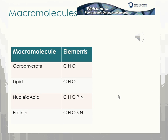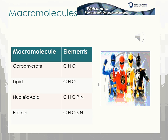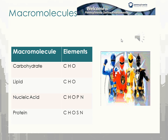We have four different macromolecules: carbohydrates, lipids, nucleic acids, and proteins. They all have slightly different elements, but they all share carbon and hydrogen because that's what makes them organic compounds. The way to remember the elements is by thinking of the Power Rangers — instead of 'go, go, Power Rangers,' I say 'CHO, CHO, CHOP, and CHOPIN' for the different elements in each macromolecule.